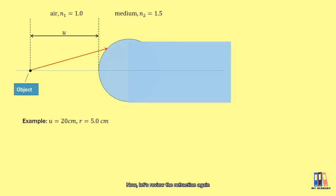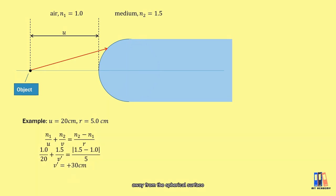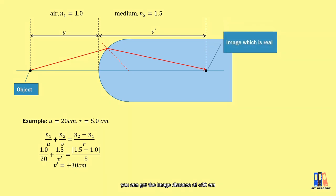Now, let's review the refraction again. Let's say we have an object that is 20 cm away from the spherical surface which has radius of 5 cm and refractive index of 1.5. If we apply the formula, we can get the image distance of positive 30 cm which is a real image.